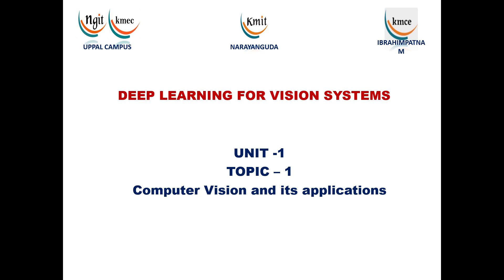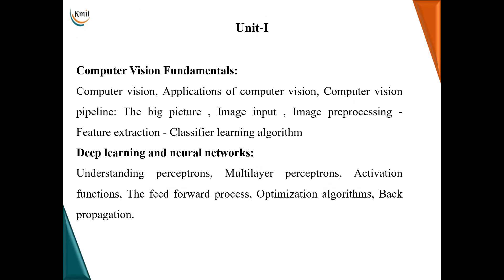Before moving on to this topic, let us have a quick look at the topics of unit 1. In the first part, we have computer vision fundamentals, where we talk about image processing and the different types of images given as input to the machine. In the second part, we talk about the basic concepts of deep learning and neural networks.